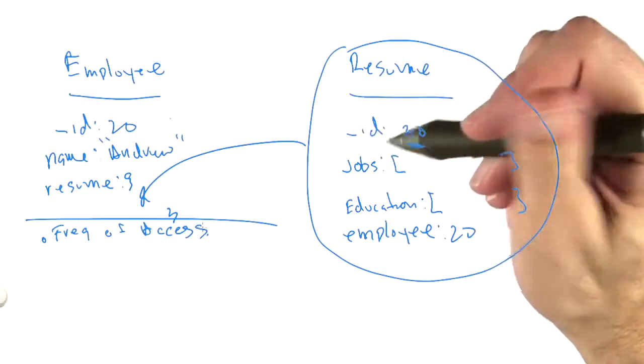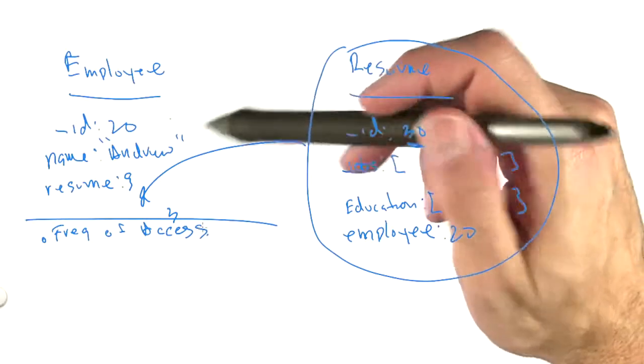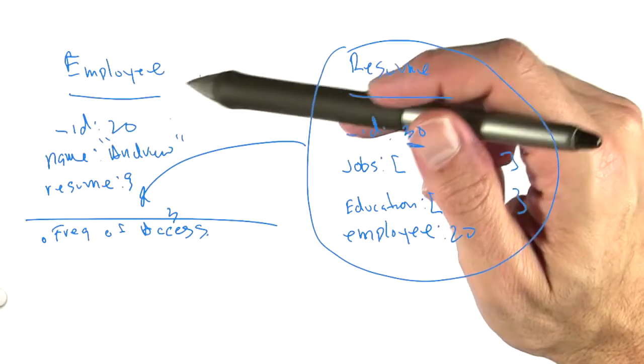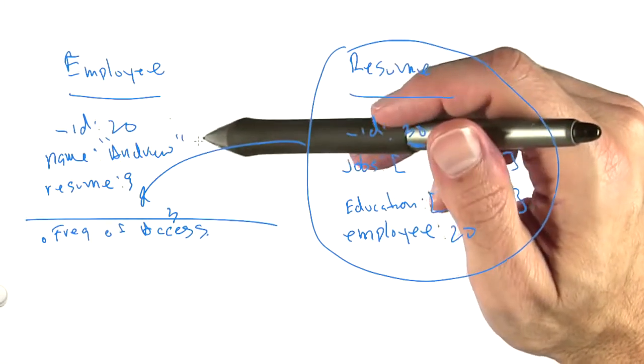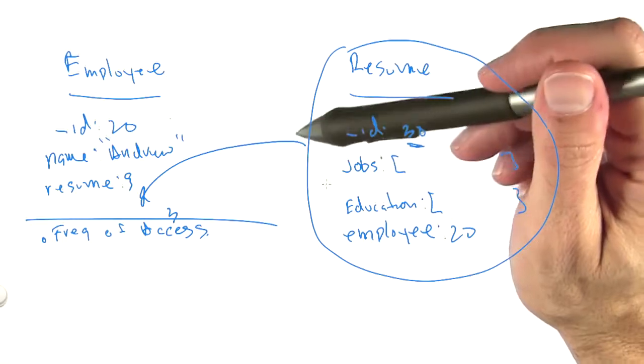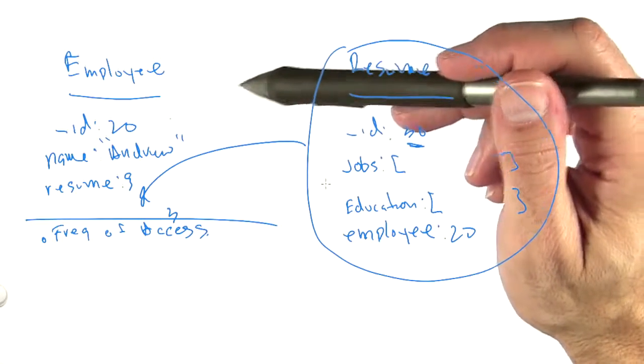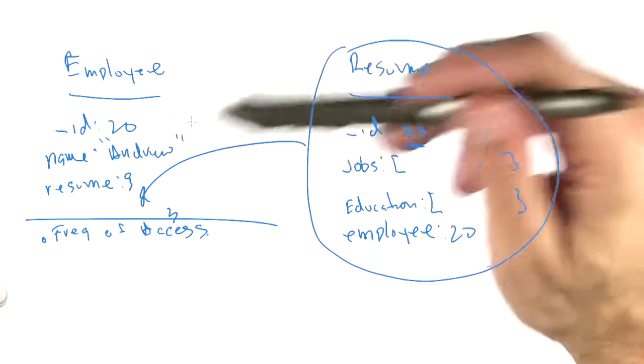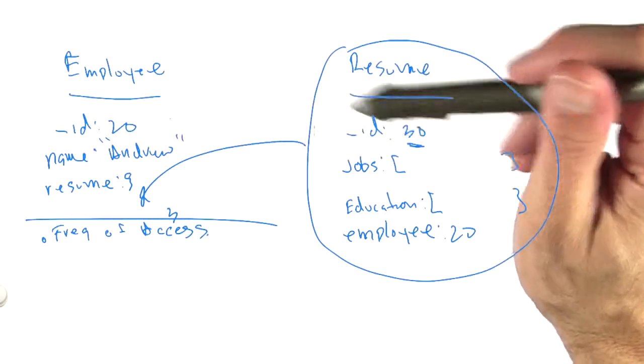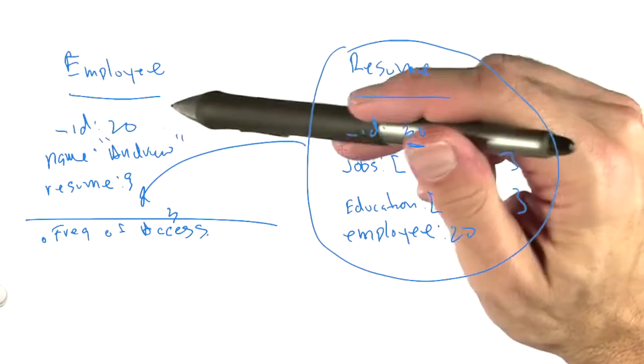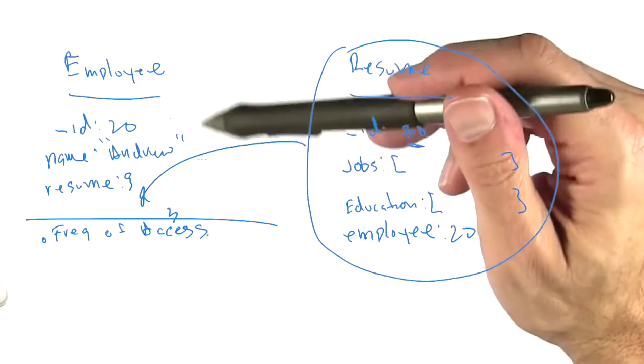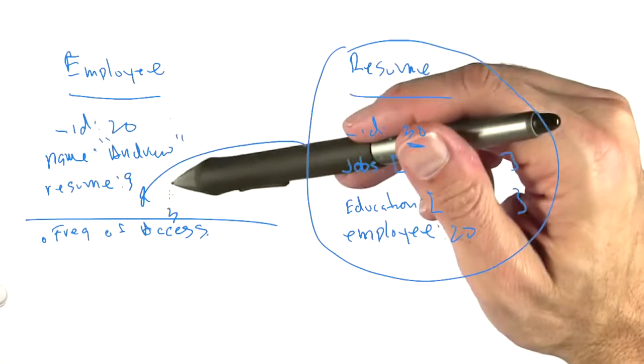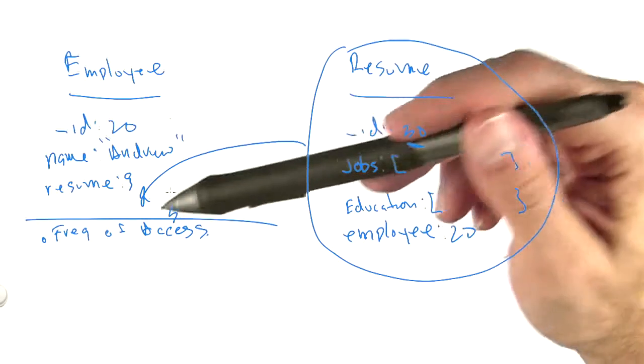Let's say, for example, that you constantly access the employee information, their biographical information, and other information about the employee, but you very rarely access their resume. And let's say it's a very large collection, and you're concerned about locality and working set size. Well, you may decide to keep them in separate collections, because you don't want to pull a resume into memory every single time you pull the employee document into memory. So frequency of access has a lot of impact on how you'd arrange this, in terms of whether you'd embed it or not.